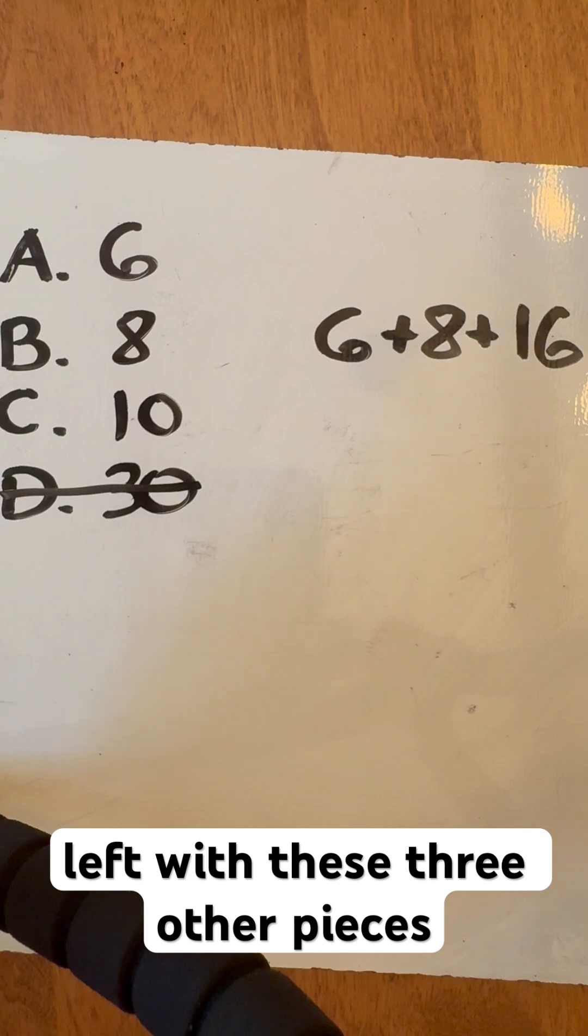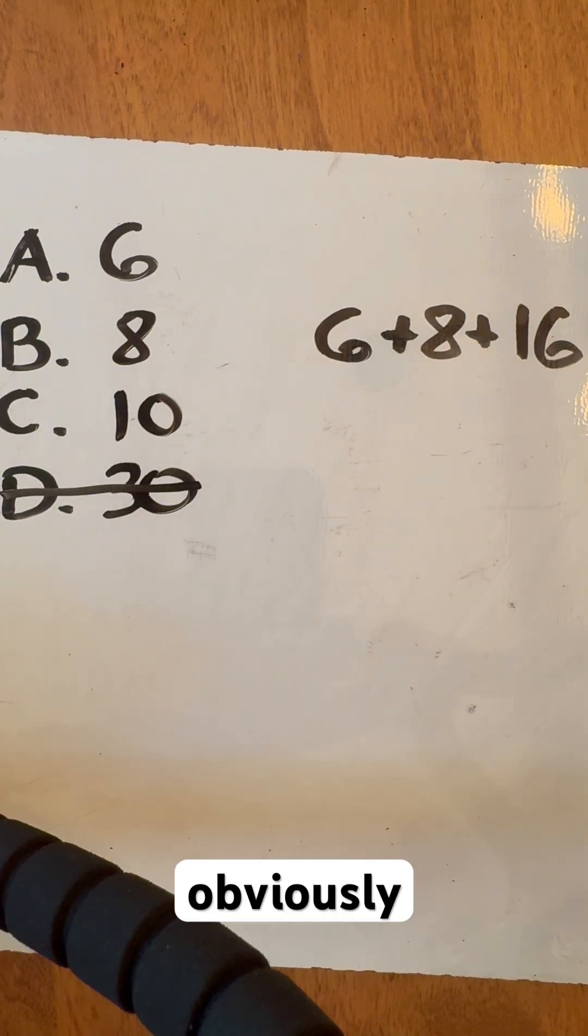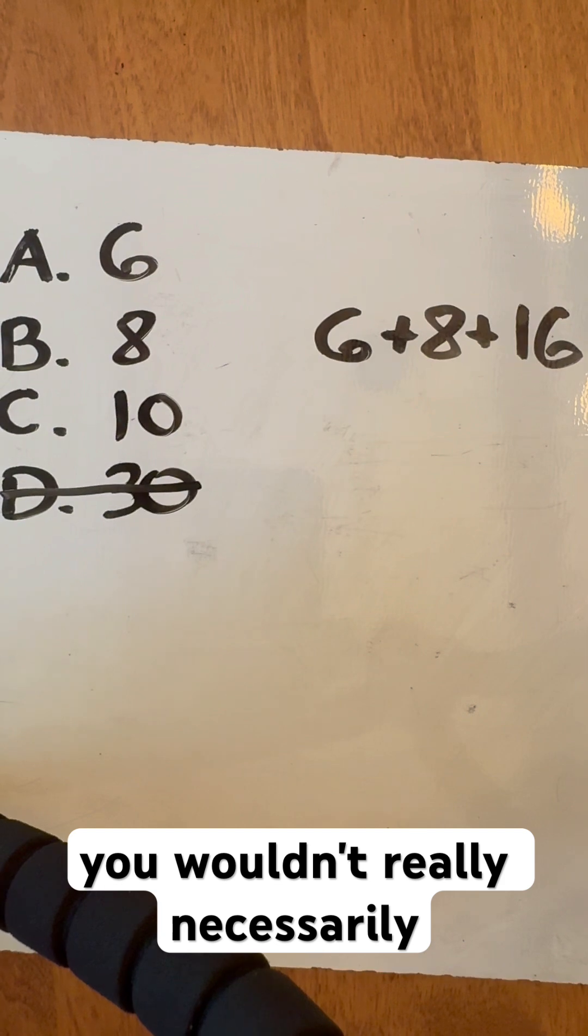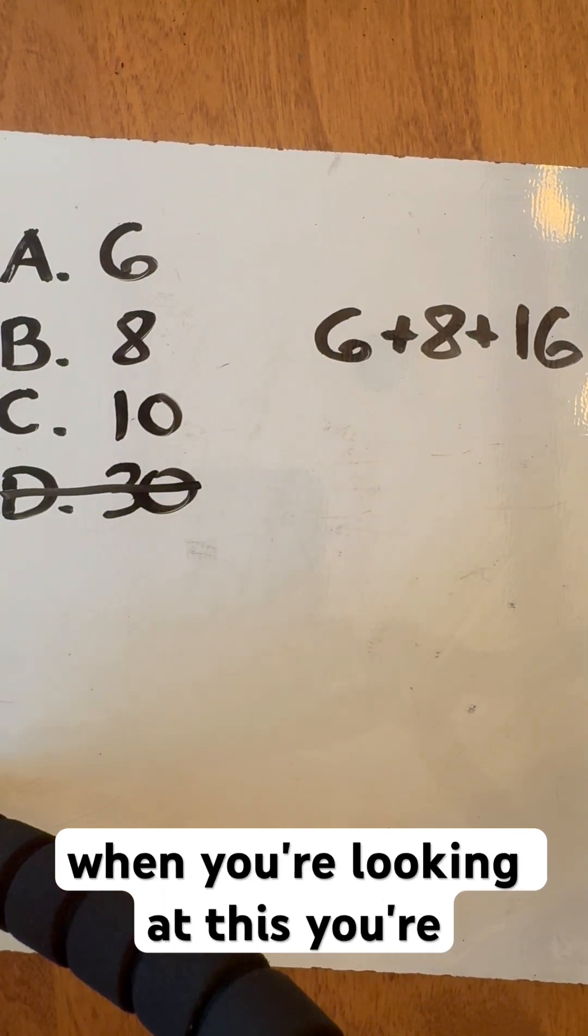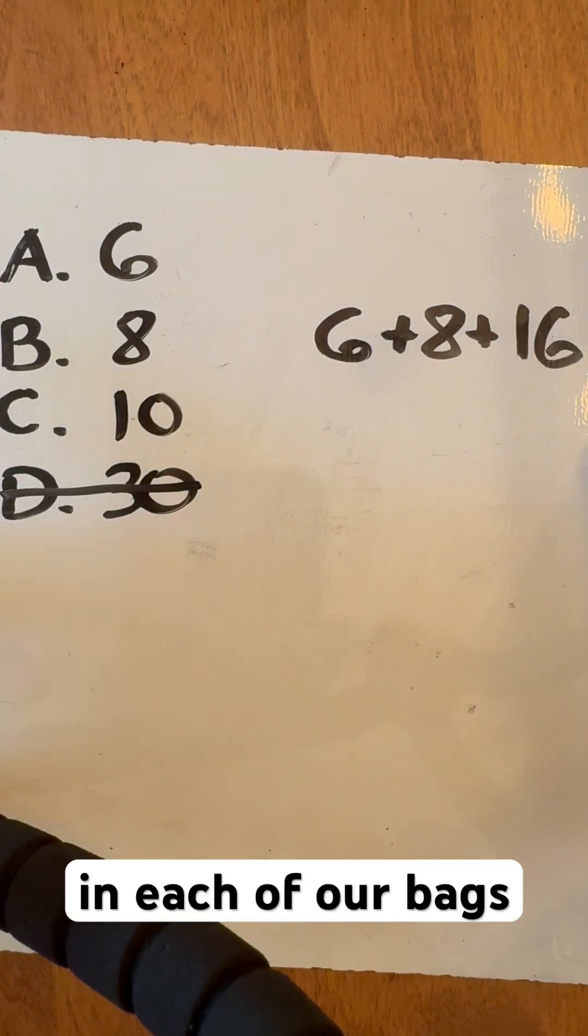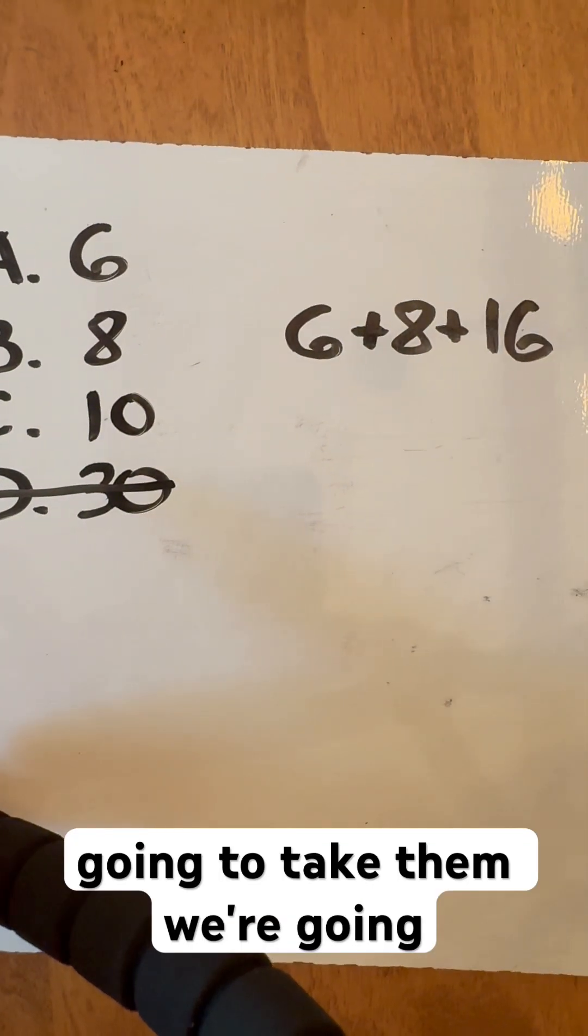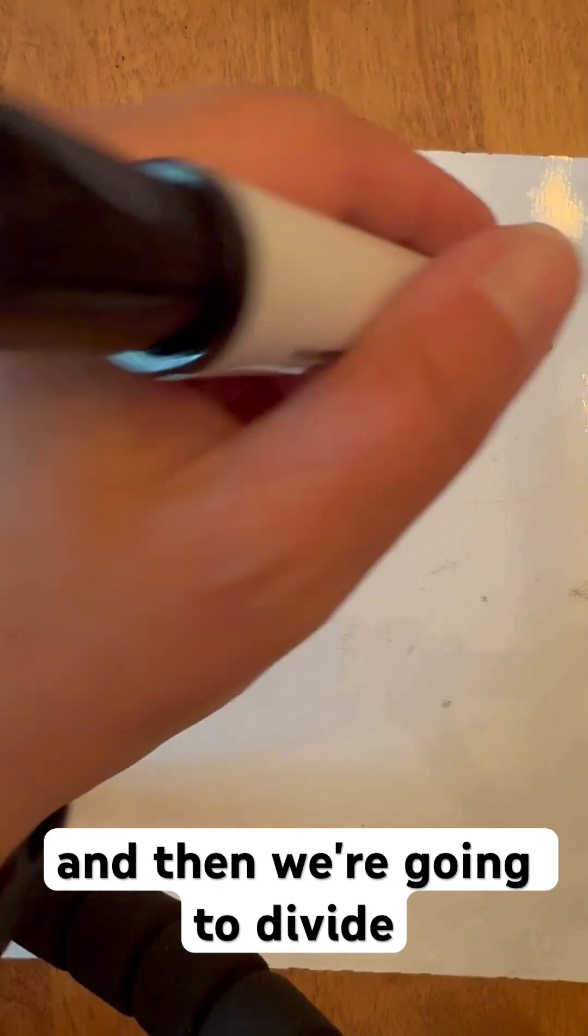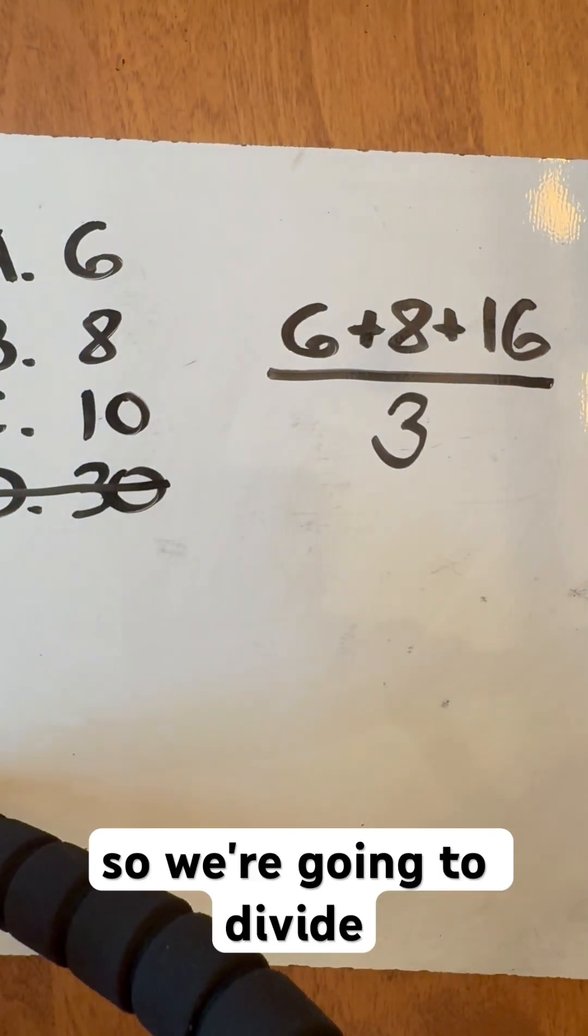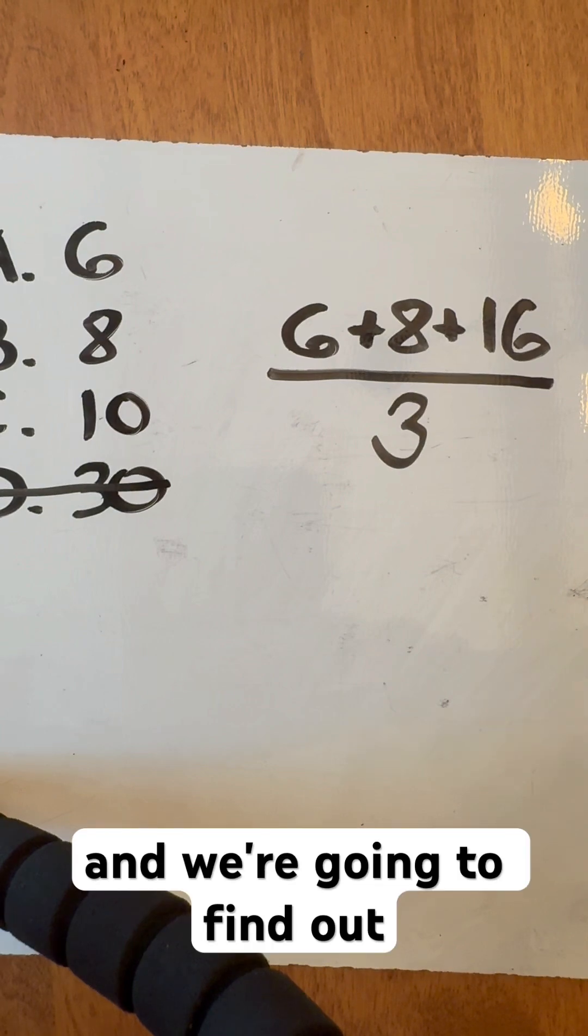Now you're left with three other options. Two of those numbers are already given in our problem. When you're looking at this, you're just trying to find the average. We take all the terms we have - the number of pieces in each bag - add them together, and divide by how many there were. In this case, there were 3 bags, so we're going to divide by 3 to find the average.